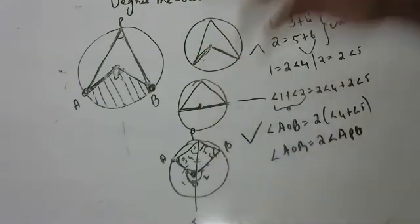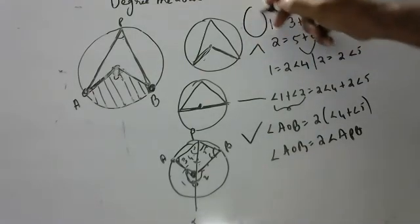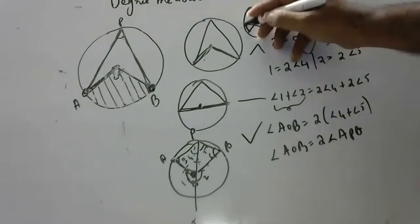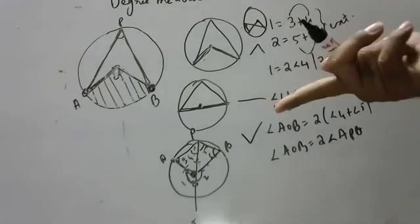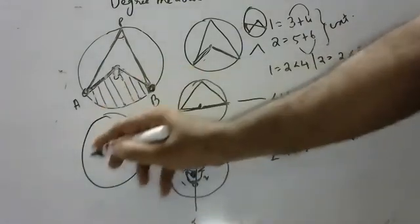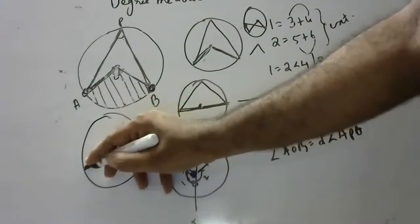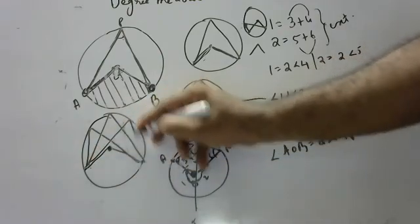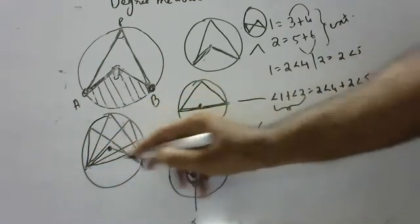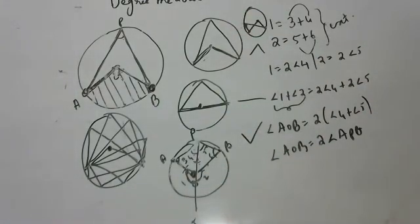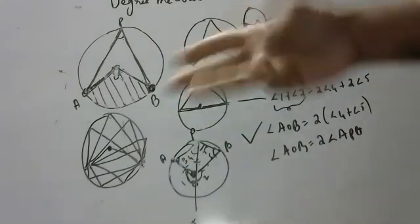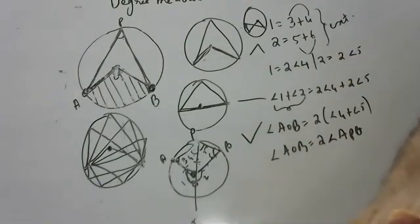All three cases have the same proof — only the diagrams differ. That is the beauty of the degree measure theorem. Whenever anyone mentions the degree measure theorem, immediately think of the three cases. The key condition is that both lines should pass through the center. This theorem is very beautiful and easy once you understand it.